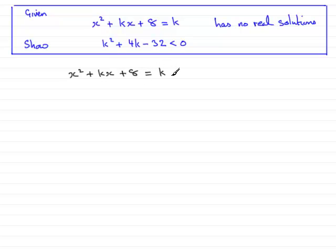This is a quadratic equation because it has an x squared term in it. It's a quadratic equation in x. But to solve any quadratic equation, what I need to do is get it in the format ax squared plus bx plus c equals 0. So I'm going to subtract k from both sides. Therefore we'd have x squared plus kx plus 8 minus k equals 0.